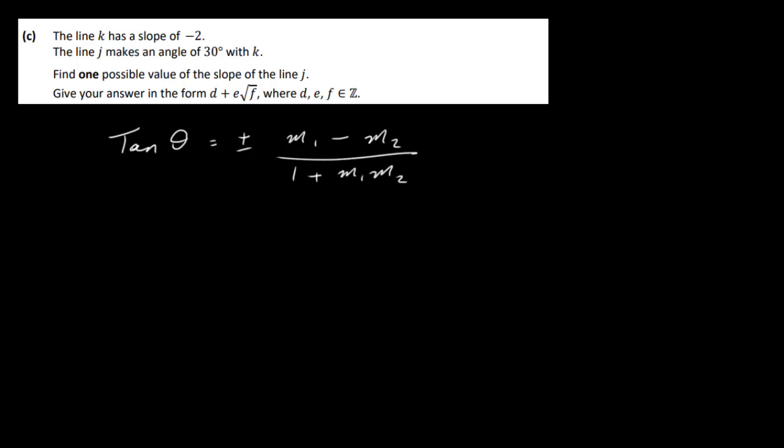Now we only need one answer. So we're not going to use both of these. I'm going to just take the positive version here. So our two lines might look like this maybe. And we have our 30 degrees here. So this would be K and that has a slope of -2. This one here is J and we've got to work out the slope here. So the tan of theta, the tan of 30 degrees is equal to, we're going to take the positive one here because we only need one solution. So M1 I'm going to take as -2 minus the other one, M2. Divide that by 1 plus M1 which is -2 times M2.